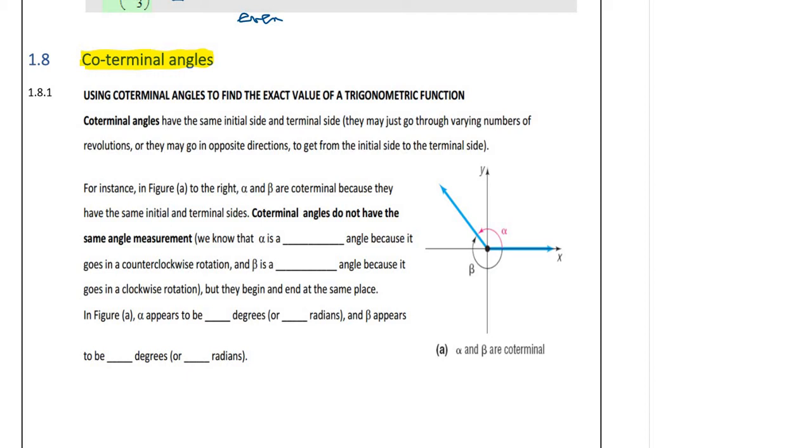Remember, co-terminal means exactly what the words are telling us. Co means together and terminal is the side that is moving around in a circle. So here is our terminal that moved from the original eastern position, the zero degrees. Co-terminal means the angles that have the same terminal together.